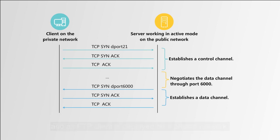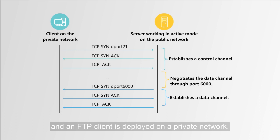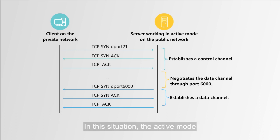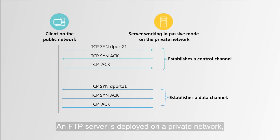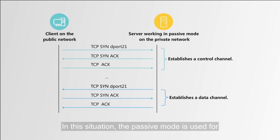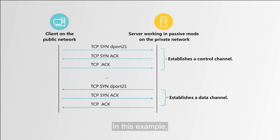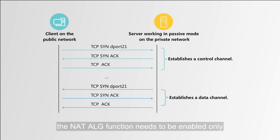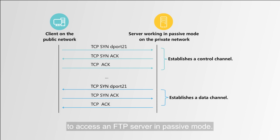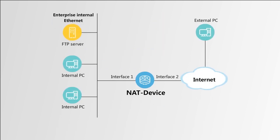First, an FTP server is deployed on a public network and an FTP client is deployed on a private network — in this situation, active mode is used for the client to access the server. Second, an FTP server is deployed on a private network and an FTP client is deployed on a public network — in this situation, passive mode is used. In this example, the NAT ALG function needs to be enabled only when an FTP client is configured to access an FTP server in passive mode.